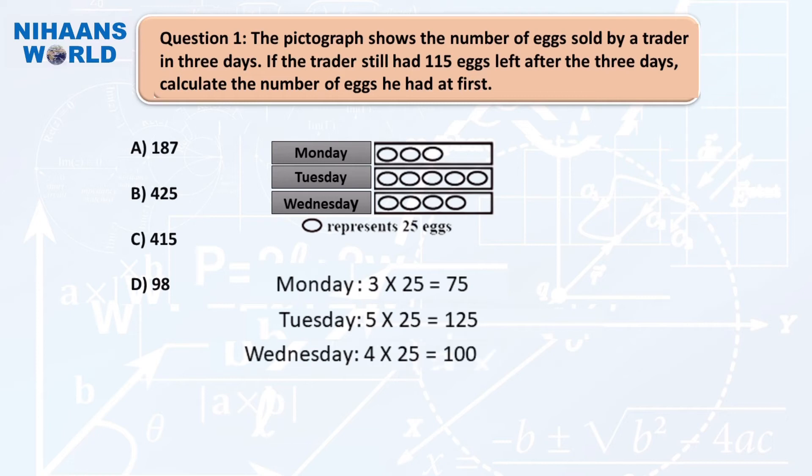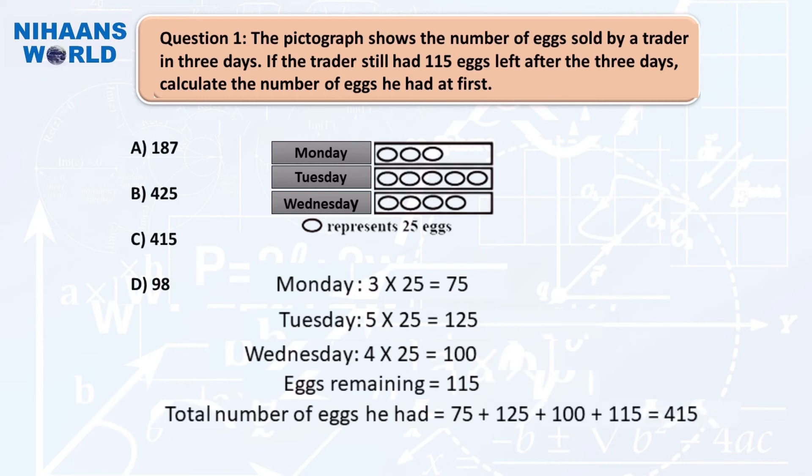115 eggs remaining. Total number of eggs he had equals 75 plus 125 plus 100 plus 115 equals 415.